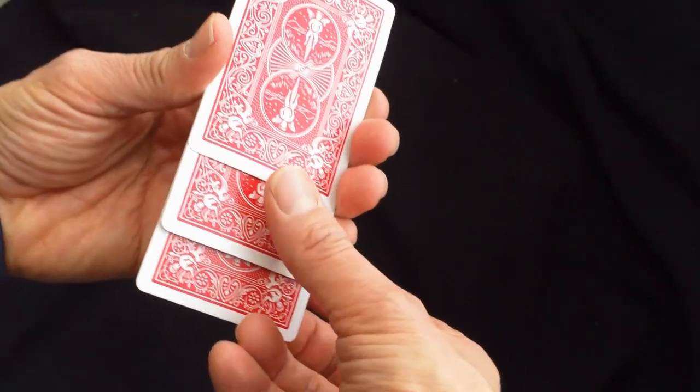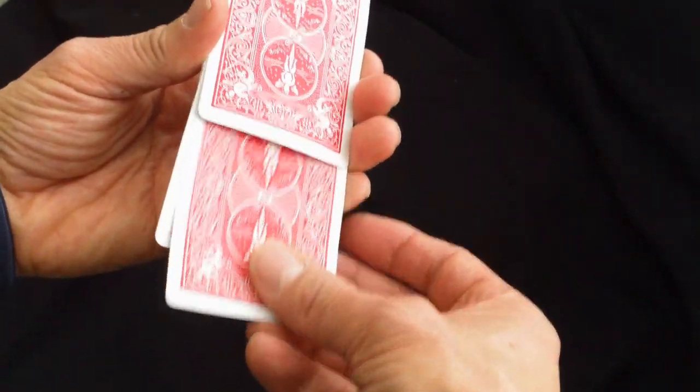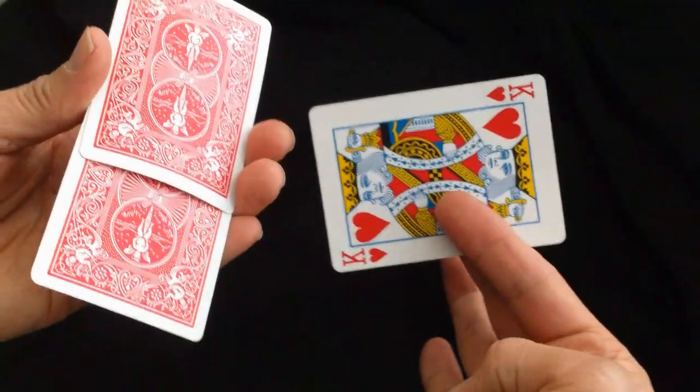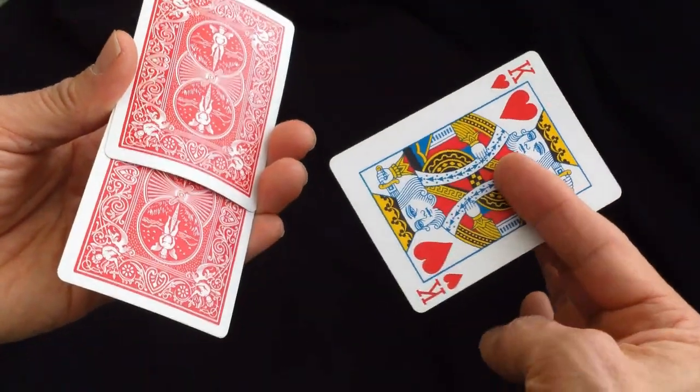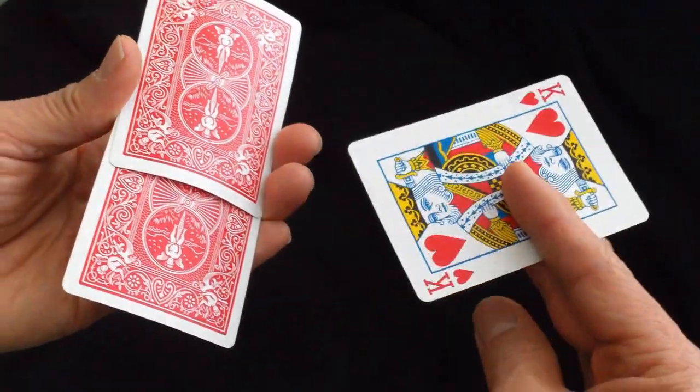Now here's where you have a little flexibility. You pull the card out. Now at this point, you can just show them that the card changed. You ask them what the card is and then you show the change.